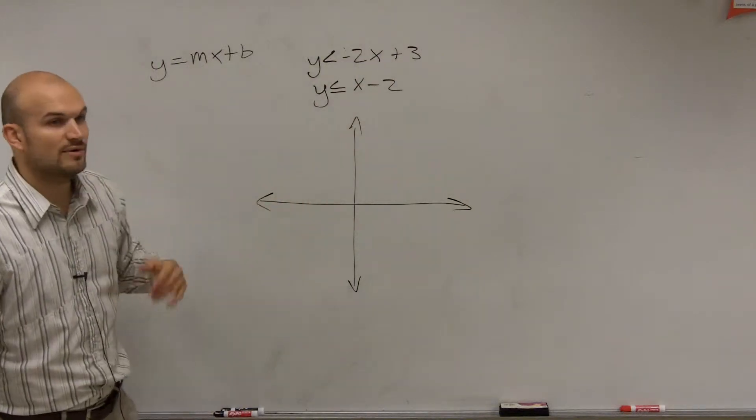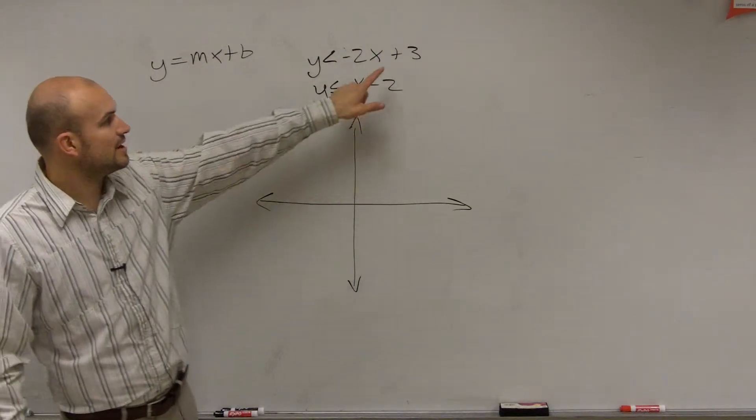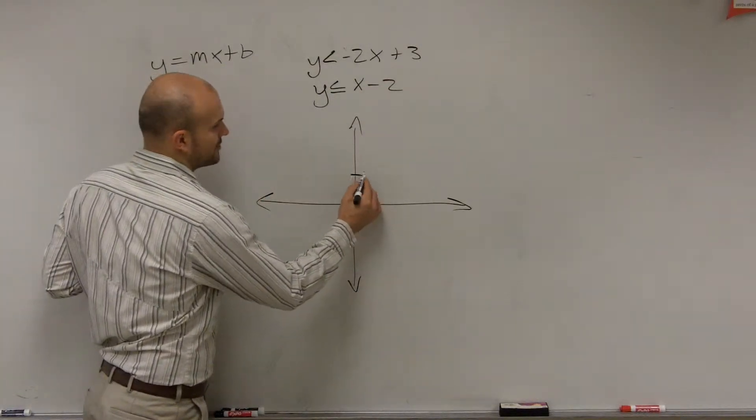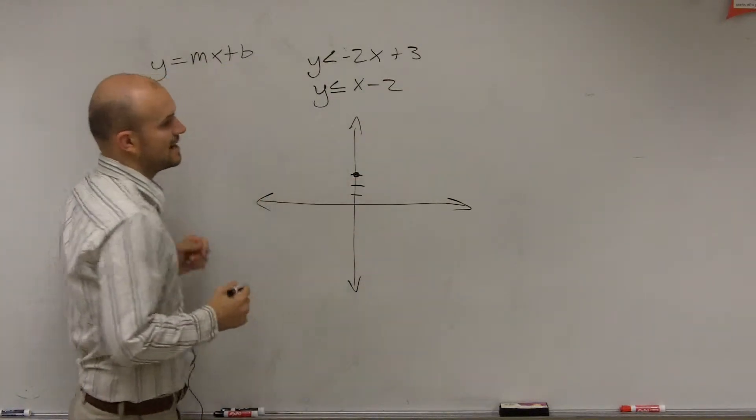So first one, now we need to determine what our y-intercept is, right, which is our b. So for the first equation, it's going to be 3. So I'm going to go up 3, 1, 2, 3. And I make a nice little dot, all right?